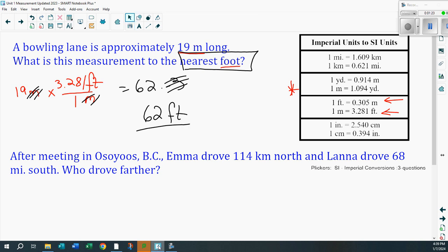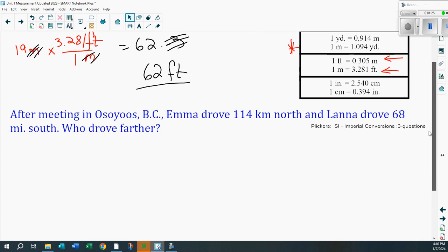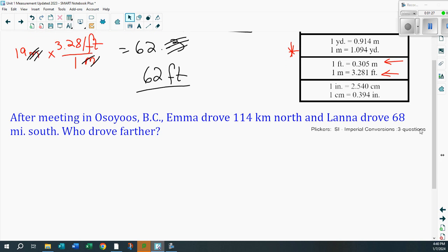Take a look at this next question. Check this out. After a meeting in Osoyoos, BC, Emma drove 114 kilometers north. So here's the meeting right there in Osoyoos. She drove 114 kilometers north. And Lana drove 68 miles south. There's 68 miles south. Now, question is, who drove further?